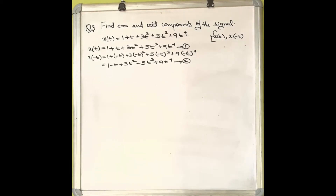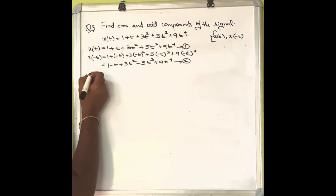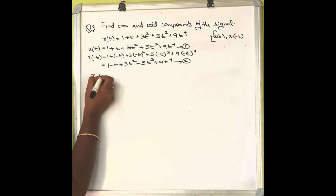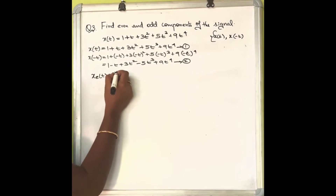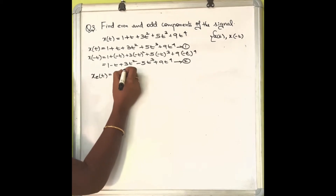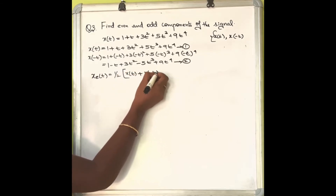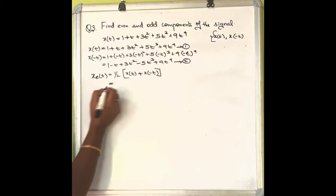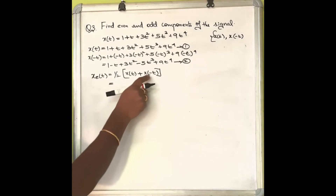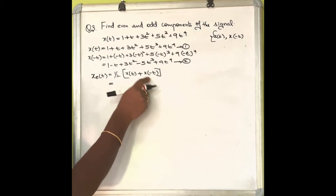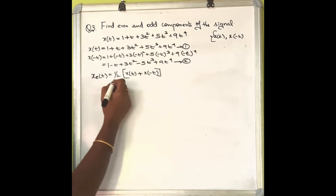Now we have equation 1 and equation 2. To find the even part, the formula is x_e(t) = half of [x(t) + x(-t)]. Substitute the values of x(t) and x(-t) from equation 1 and equation 2.